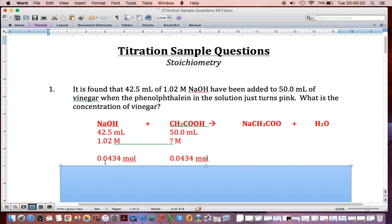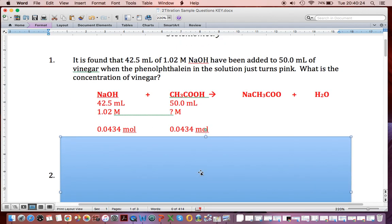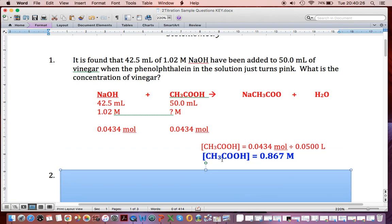We use some stoichiometry. We get our moles of this, one-to-one. We get the same number of moles of that. We divide by the volume. Of course, it's got to be converted to liters, and we get 0.867 M.